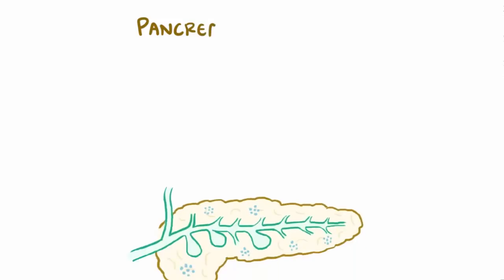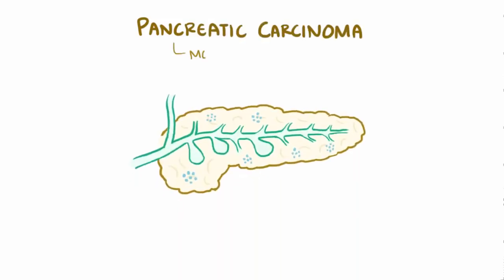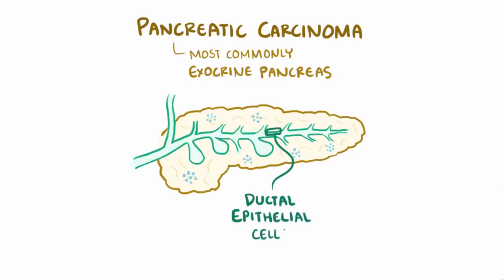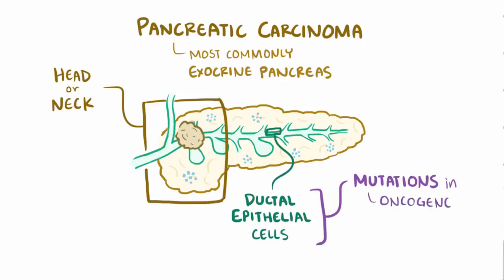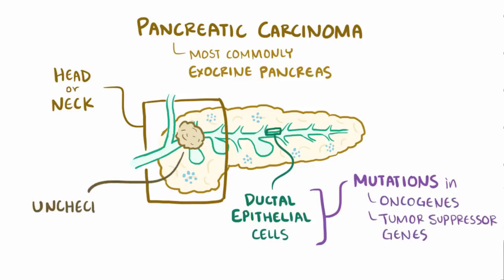As a quick recap: pancreatic carcinoma is most commonly a cancer of the exocrine pancreas, especially in the ductal epithelial cells of the head and neck of the pancreas. It's often caused by mutations in oncogenes and tumor suppressor genes, which leads to unchecked cell growth.